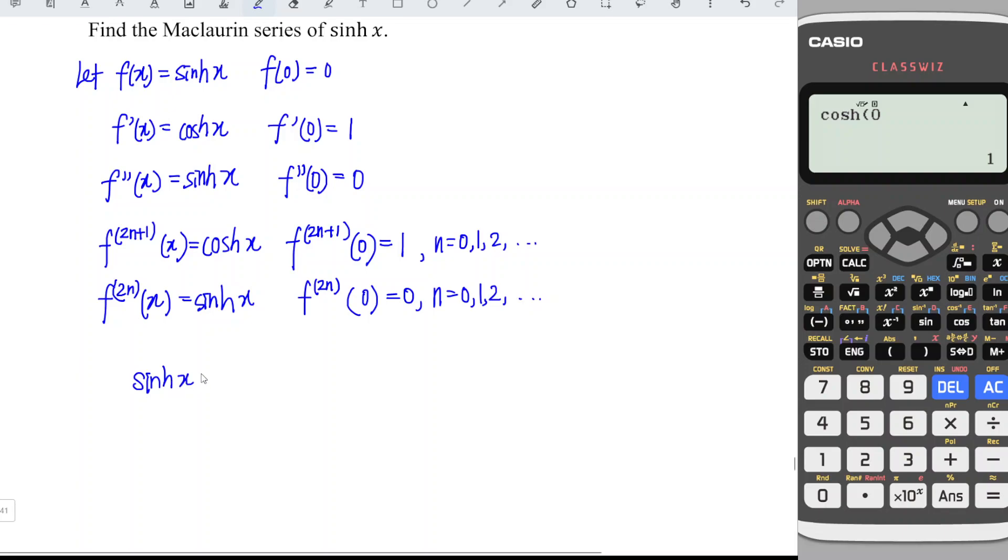The Maclaurin series of the sinh function is equal to... we just have to refer to the odd derivative. So which means that first derivative, so is 1 over 1 factorial, x to the power of 1. The power and the factorial number refer to the number of the derivative that we have.